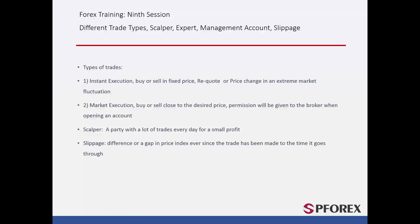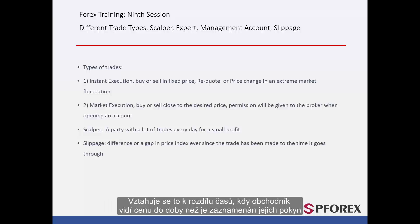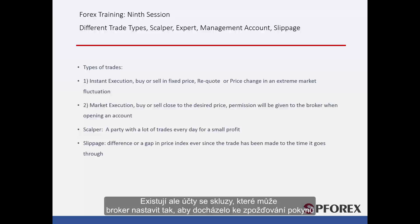It is now time to talk about something called delay or slippage. It refers to the time difference from the moment an investor or trader sees the price to the time that the order request is registered for them. This delay usually happens due to enormous market fluctuations and spread widening. But there are accounts with slippage that brokers can manage to establish a delay on an order.